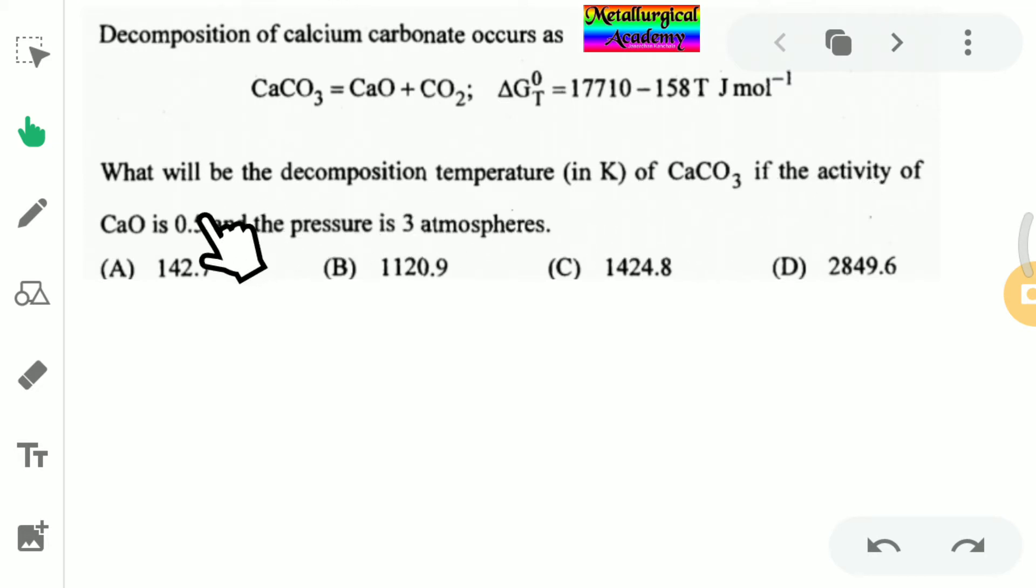If the activity of CaO was 0.5 and the pressure is 3 atmospheres, here the delta G0 was given. Delta G0 is equal to minus RT ln K. We know this formula.